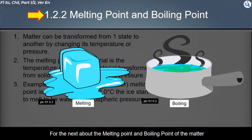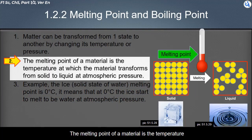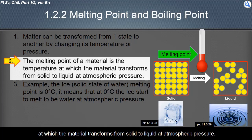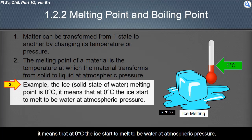Next, the melting point and boiling point of matter. Matter can be transformed from one state to another by changing its temperature or pressure. The melting point of a material is the temperature at which the material transforms from solid to liquid at atmospheric pressure. For example, ice is the solid state of water and its melting point is zero degrees Celsius, meaning that at zero degrees Celsius, ice starts to melt into water at atmospheric pressure.